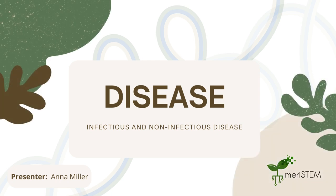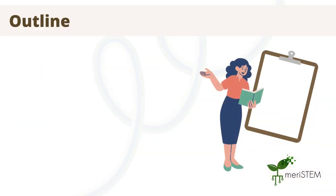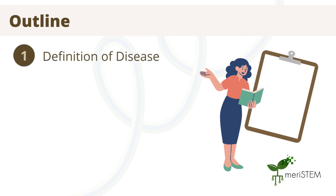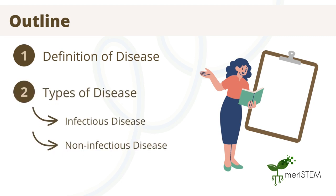Have you ever wondered why you get sick? How can some sicknesses happen on their own and why are others caught from those around you? In this video we're going to be talking all about diseases. We'll start with the definition of what disease is before discussing two major types of disease: infectious and non-infectious disease.